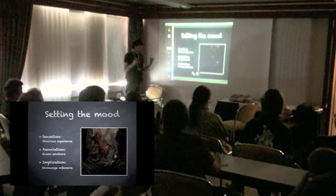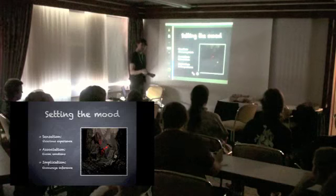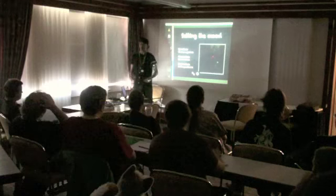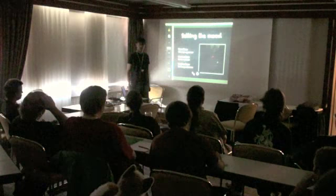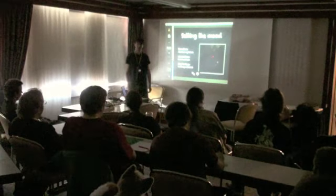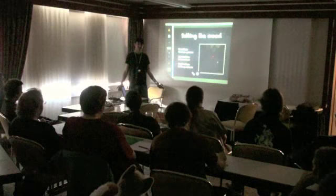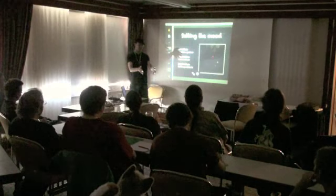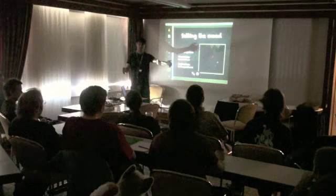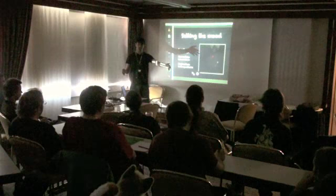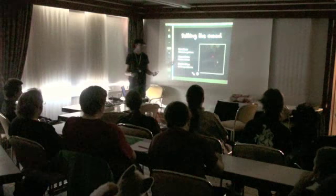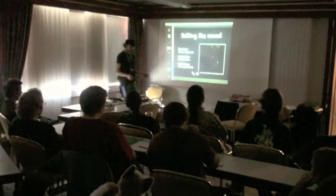And then the last one is the implication, where you encourage inference. You give a couple of pieces of information that your readers can then piece together to form the narrative. Like the chalk outline that we saw earlier — you just see chalk on the road. There's not even any blood, no evidence of what happened. But you understand what happened. A tiny coffin this size — that's all you need to see to realize this is about a terrible, terrible tragedy. A child died, and you immediately infer all the emotions and drama that came with that.